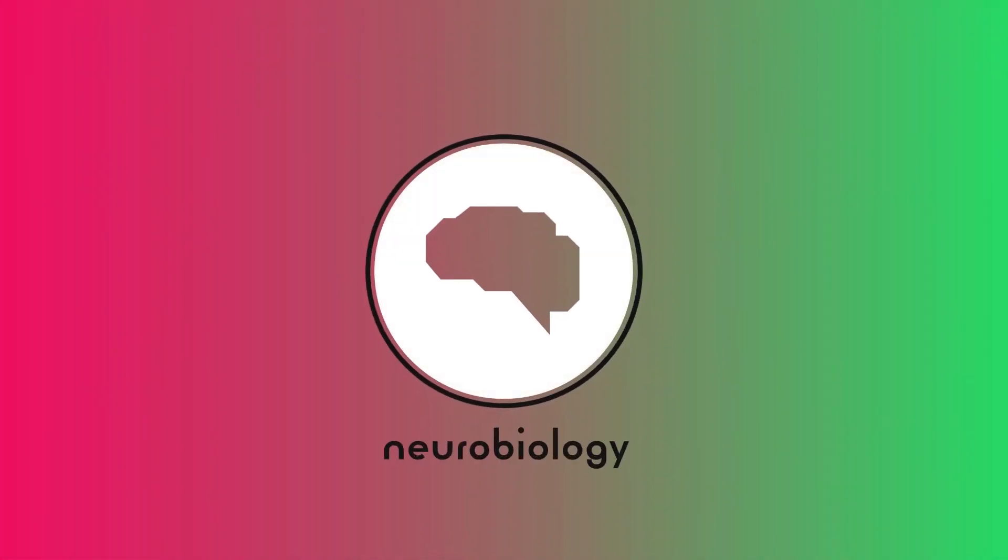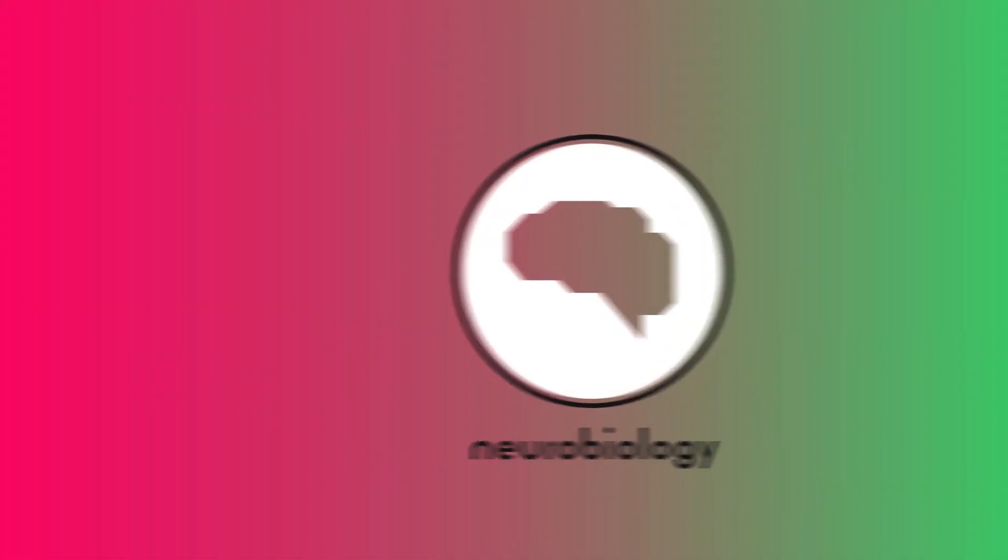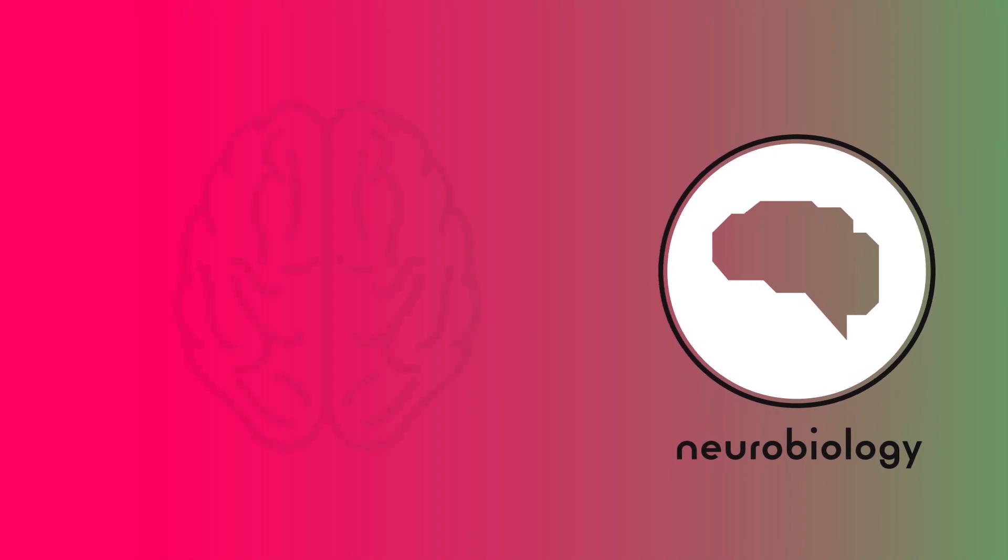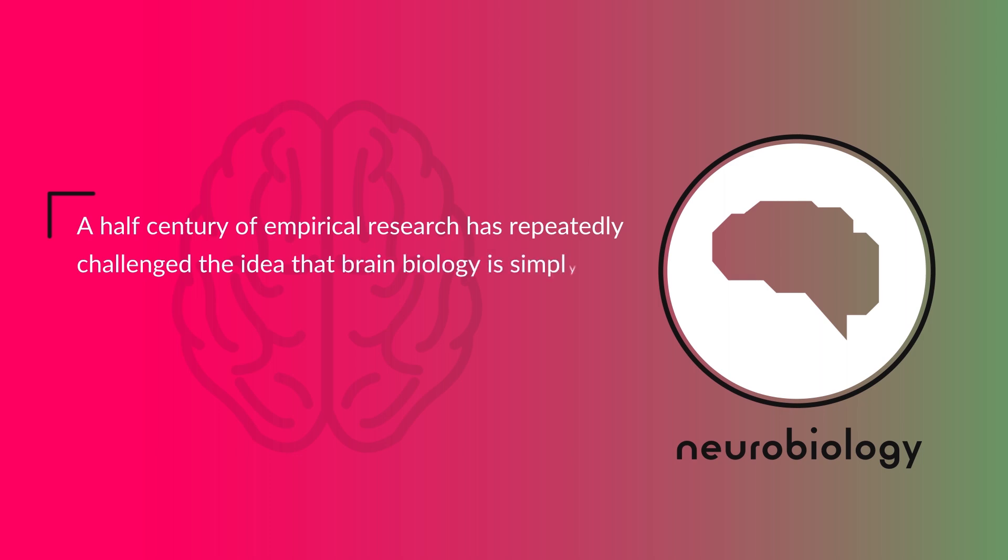Part 2. Neurobiology. Next, the author uses neuroscience research to argue that male and female cannot be clearly defined. They write, quote, a half century of empirical research has repeatedly challenged the idea that brain biology is simply XY equals male brain, or XX equals female brain, unquote.